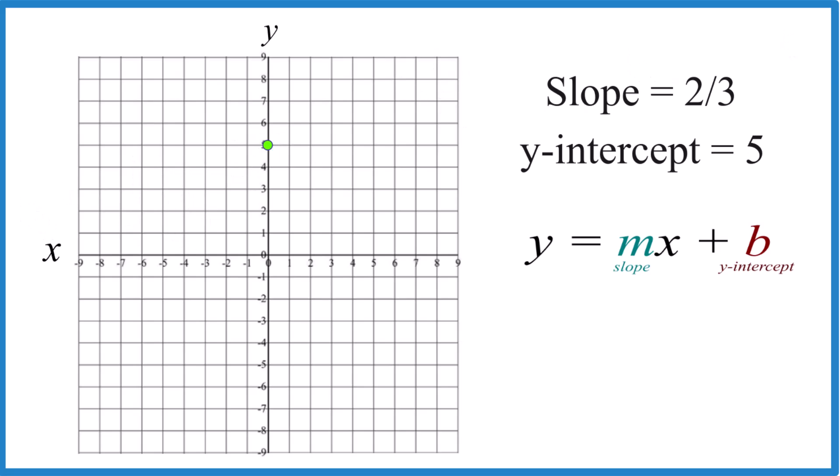For the slope, think about that as rise over run. We're going to rise two, run three. Go to the y-intercept, rise one, two, run one, two, three, and you can see our line starting to form.